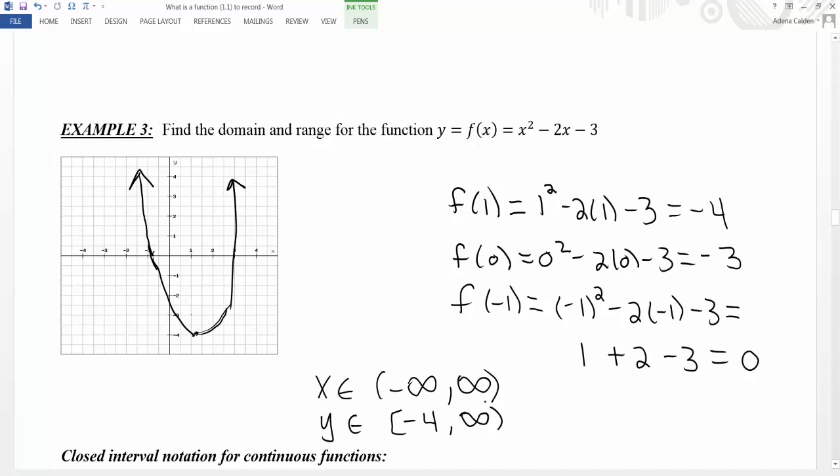So for example, in the range, I can get anything between negative 4 and infinity. I could get 0, I could get 1, I could get pi, I could get lots of decimal numbers as long as they're between negative 4 and infinity. So this notation is used for continuous functions.